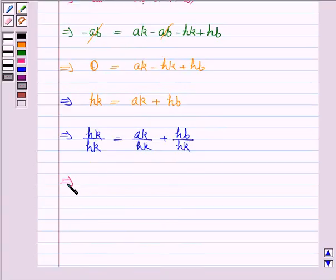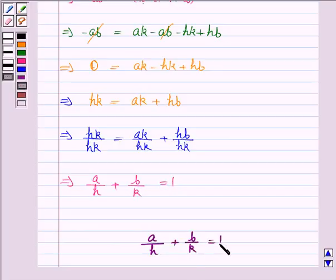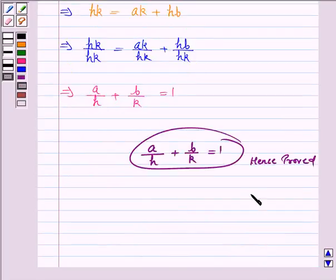And this implies a/h + b/k equals 1. Hence, we have proved that a/h + b/k equals 1. So, this completes the question. Hope you enjoyed the session. Goodbye and take care.